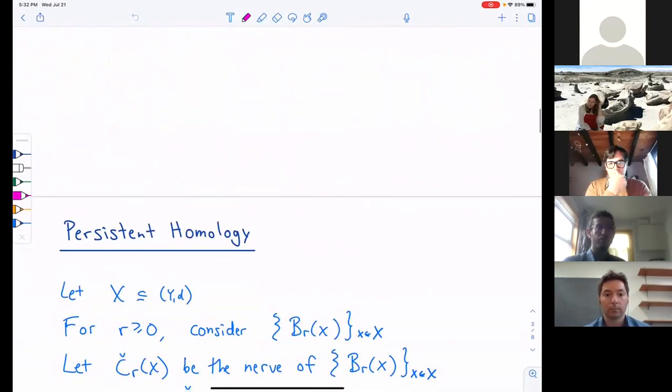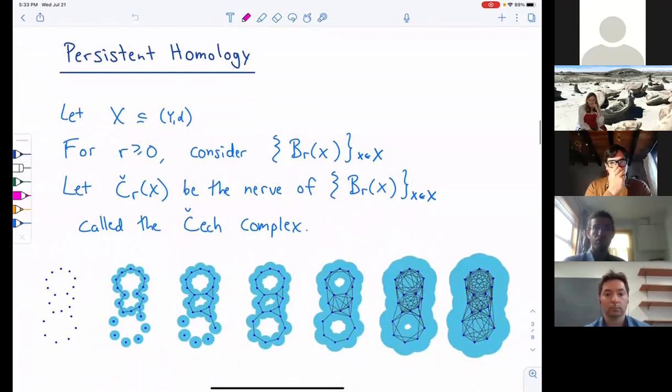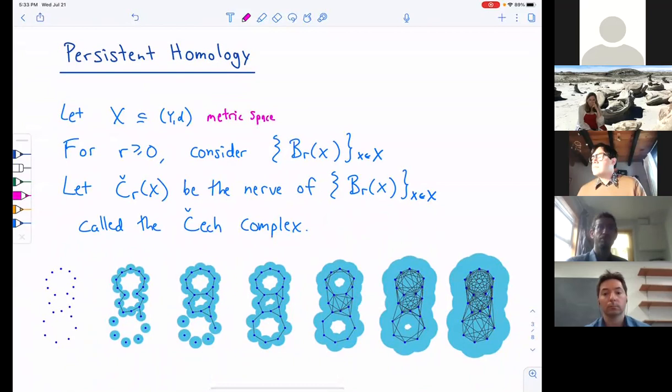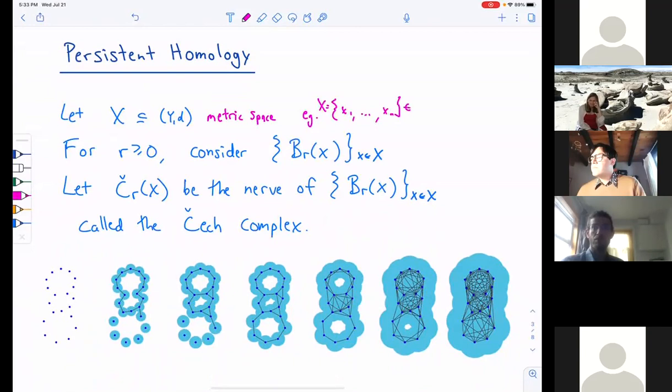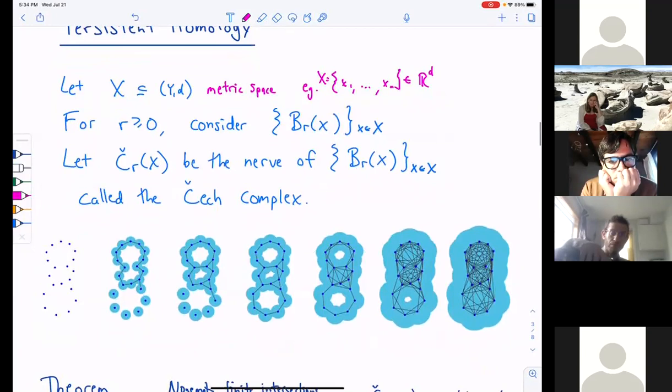So I'm going to present maybe the simplest and most common setting for persistent homology. We start off with a subset of a metric space. So y comma d here is a metric space. And the main example maybe to keep in mind is that x here is just a finite set of points in Euclidean space. If we have such data, we have this discrete data. We turn it into something more topological by fixing a scale parameter r and then considering the balls of radius r centered at the points in x. And of course, there's a combinatorial version of this, which is given by the nerve of that collection of balls. This is called the check complex. And here's a picture of what some of these look like for varying scales of r from the points to the plane at the left.